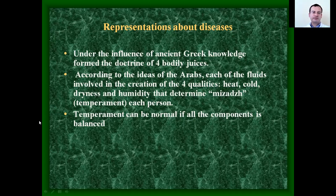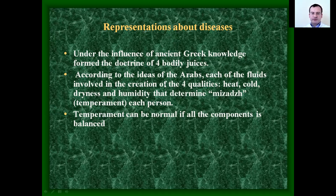Under the influence of ancient Greek knowledge, the Arabs founded the doctrine of four bodily juices. According to Arab ideas, each of the fluids was involved in creating four qualities — heat, cold, dryness, and humidity — that determined the mizaj, or temperament, of each person. Temperament could be normal if all the components were balanced.